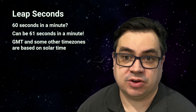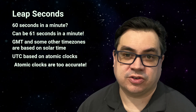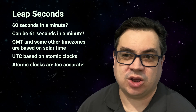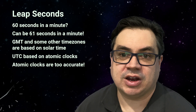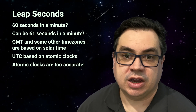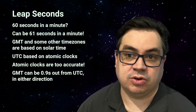Finally, onto leap seconds. Everyone knows there are 60 seconds in a minute — but what if I told you it's possible to have 61 seconds in a minute? GMT and a few other time zones are legally based on observation of solar time, whereas UTC is based on atomic clocks. The problem is atomic clocks are way too accurate and the world is a bit more like a big ball of wibbly-wobbly timey-wimey stuff. There are irregularities in observed solar time because the Earth speeds up and slows down slightly, in addition to a slight constant slowdown of the Earth's rotation. Since GMT is based on solar time, it can be up to 0.9 seconds different in either direction from UTC.